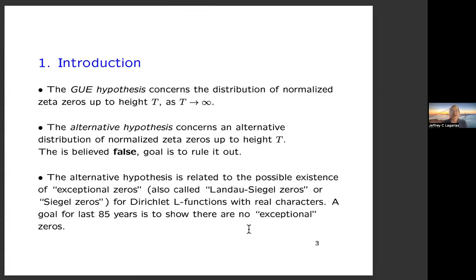The GUE hypothesis — the Gaussian unitary ensemble — concerns the distribution of normalized zeta zeros up to high T as T goes to infinity. The alternative hypothesis concerns an alternative distribution of normalized zeta zeros up to high T which we've been unable to rule out, and it's believed to be totally false. The number theory goal is to rule it out. This hypothesis is related to the possible existence of exceptional zeros for Dirichlet L-functions with real quadratic characters, which show up in estimating class numbers for quadratic fields.